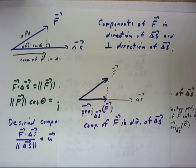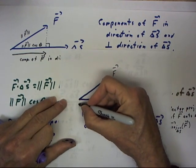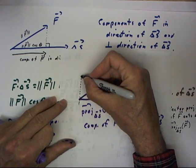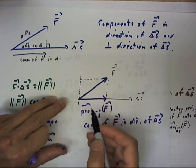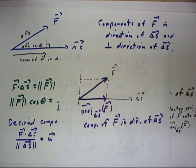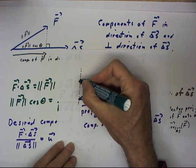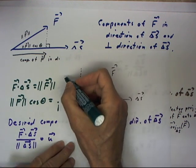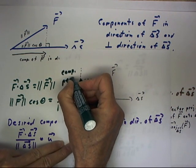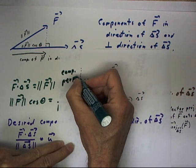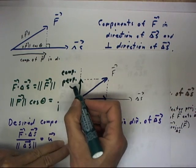We still want to find the component of f perpendicular to delta s, so what we can do is sketch a line here that's perpendicular to delta s, and we can project f over here and see that the vector that we're trying to get, the vector that we're after, is this component now perpendicular. This is the component perpendicular. I'm going to write all that out.